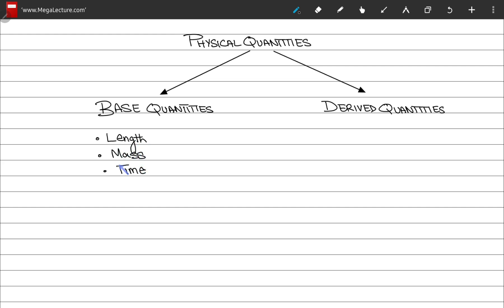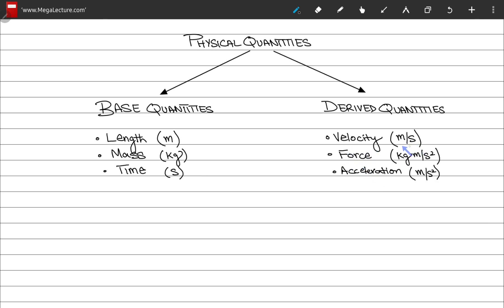Some of the base quantities are length, mass, and time, and these are their SI units written as base units. Here are some of the derived quantities, and their SI units are written in terms derived from these base quantities: meters, kilograms, and seconds. You can see that derived units can also be derived from derived quantities, such as force, written with meters per second squared, which is the SI unit for another derived quantity — acceleration.